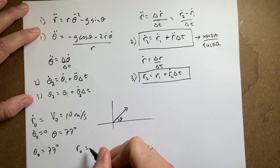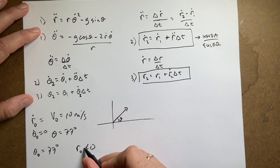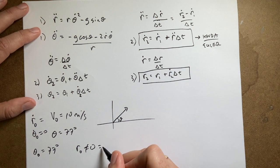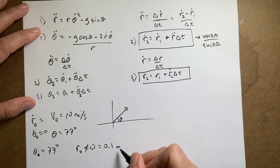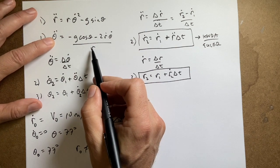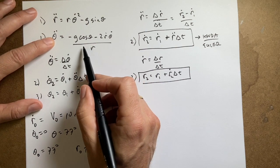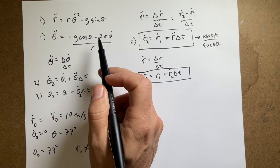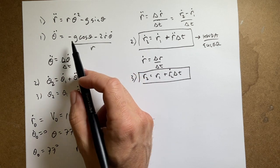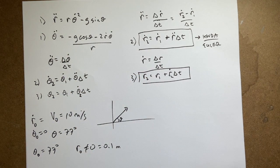What about r initial and theta initial? Well, theta initial is obviously 77 degrees, change that to radians. r initial is not zero. I can't. I mean I could but I can't, right? So let's just say this is like 0.1 meters or something like that. Because if I put in r is zero right here, then I'm going to have to divide by zero and I'm going to get an explosion for theta double dot and then everything. Nothing will work. So I'm just going to pick a small value and see if I can get it to work.